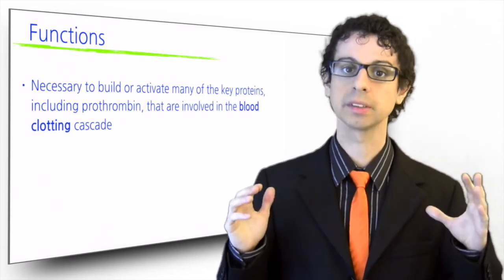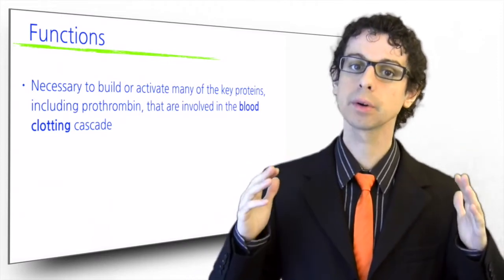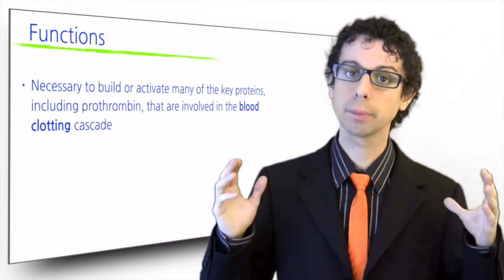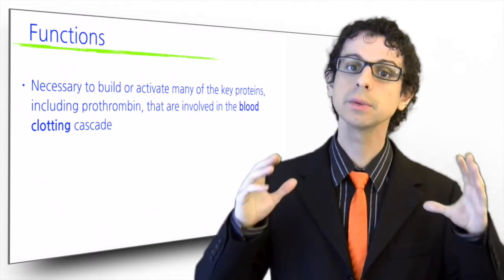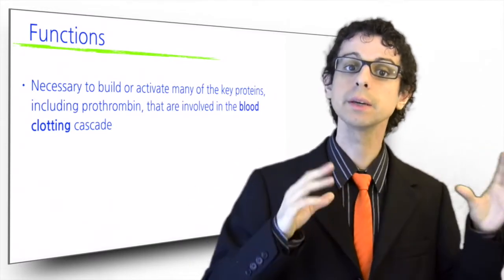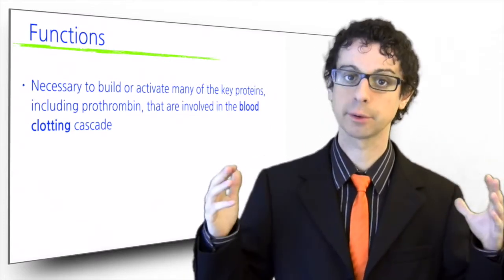Without these compounds, our liver cannot build or activate many of the key proteins, including prothrombin, that are involved in the blood clotting cascade, the sequence of events that allow your blood to turn from liquid to solid at wound sites to prevent infections and hemorrhages.